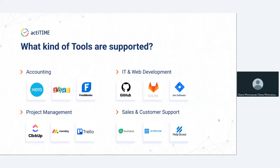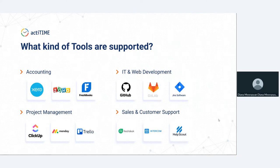There is the segment of IT and web development — you'll recognize tools like GitHub, GitLab, and Jira. Many of you use additional project management tools alongside ActiTime, and those are represented in Zapier as well so you can make connections between them. There's also sales and customer support, so if you use a CRM or a ticketing platform, those are available on Zapier too.